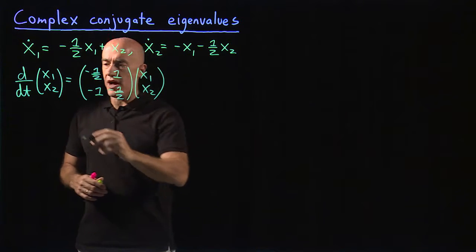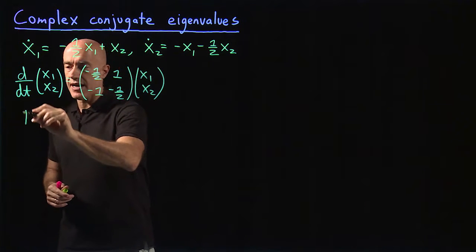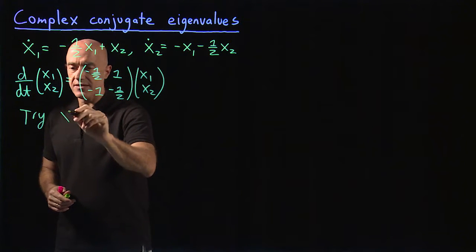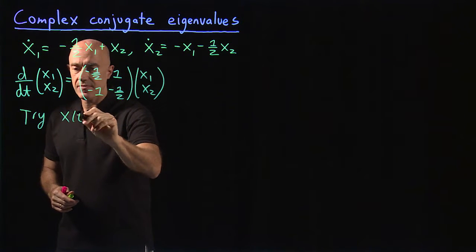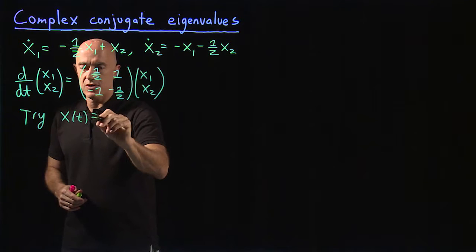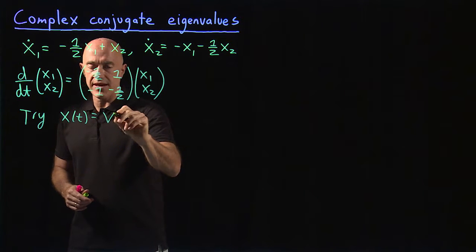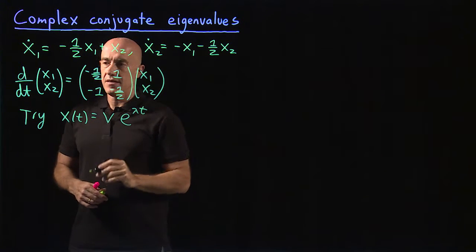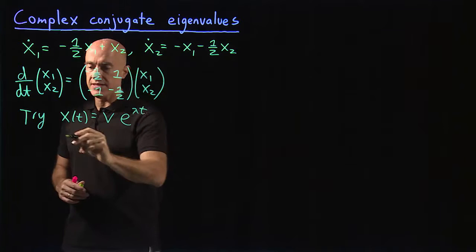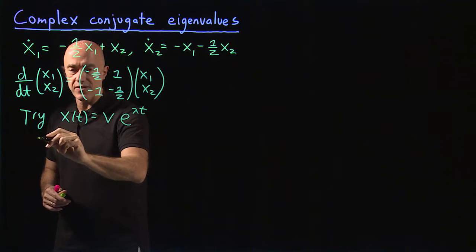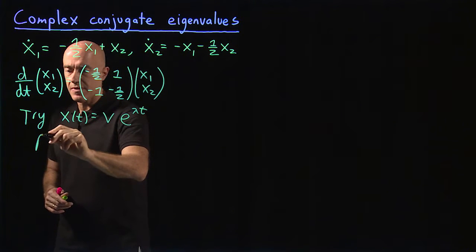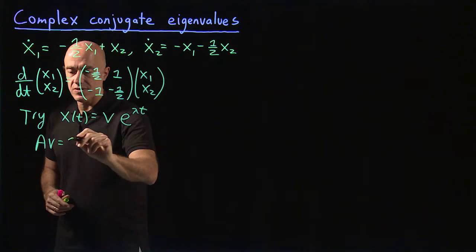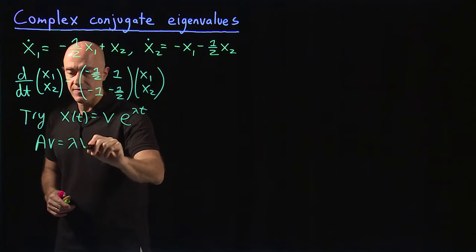We try our ansatz: x(t) equals a constant vector times e to the λt. That gives us our eigenvalue problem, Av equals λv.